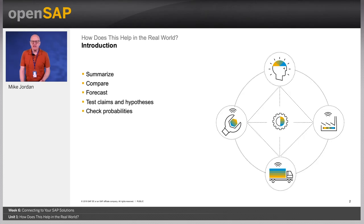Hello and welcome back to week six of the OpenSAP course, Introduction to Statistics for Data Science. In this unit we'll be looking at how statistics can help in the real world. Every day in our professional and personal lives we're faced with making decisions, but the data that should feed those decisions are often huge and complex.